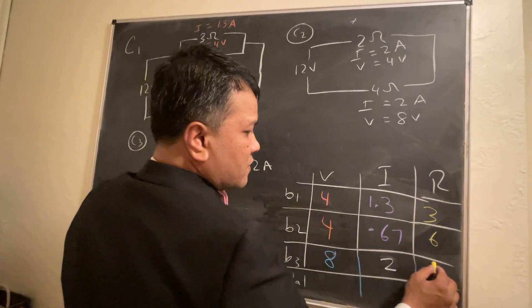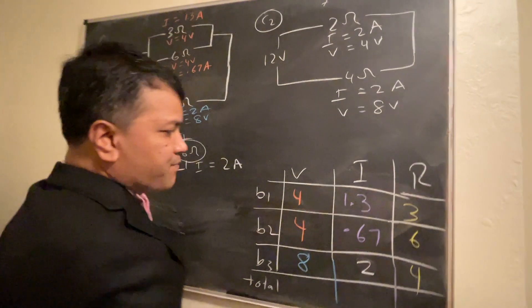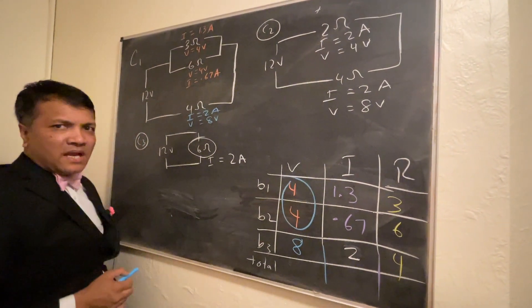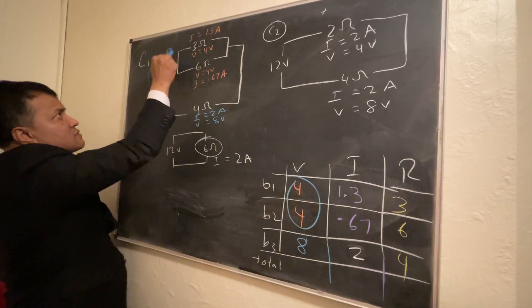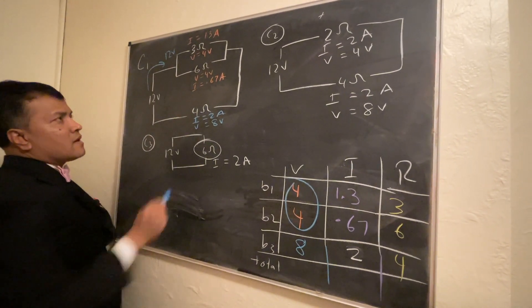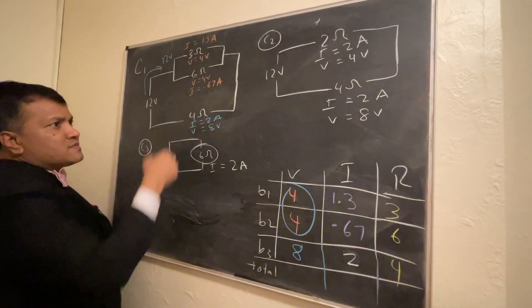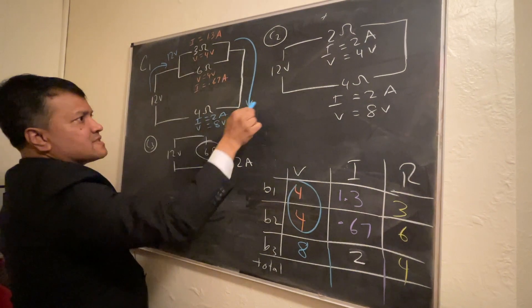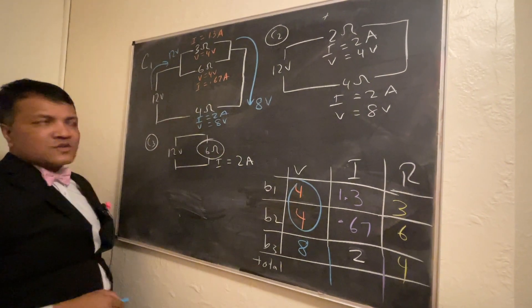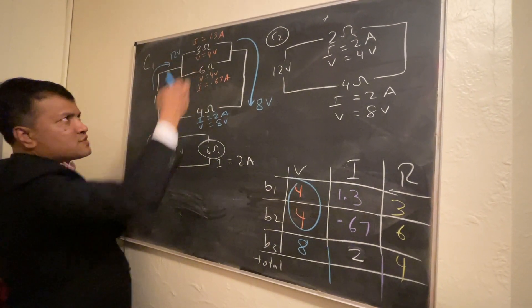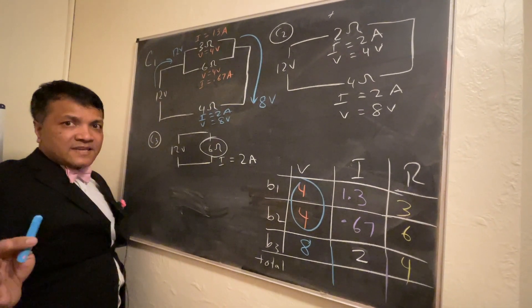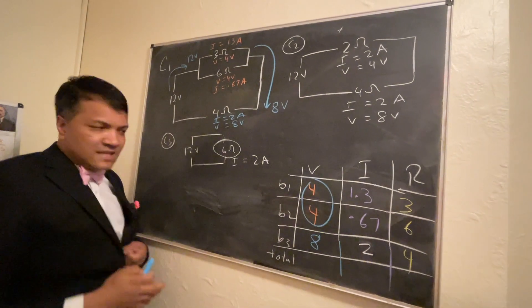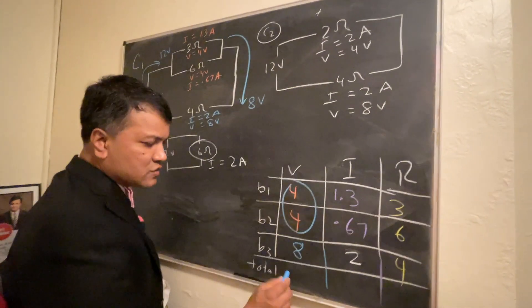The three-ohm and six-ohm resistors are in parallel. Together they consume 4 volts, and the four-ohm resistor releases 8 volts. So voltage consumption by the two parallel resistors is just 4 volts because they are in parallel. Four plus eight equals 12 volts total.